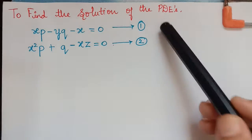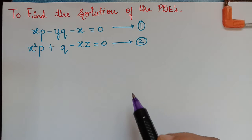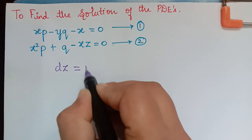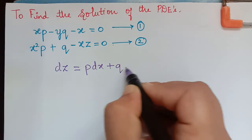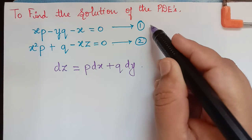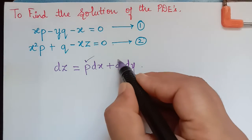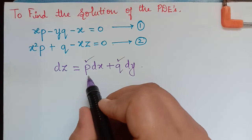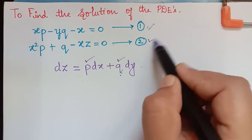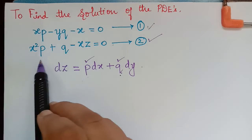I have taken this as equation 1 and this as equation 2. We will find the solution of this equation by using dz = P dx + Q dy. Using this linear equation, we will find the solutions of the given PDEs. To do so, we need the values of P and Q, which will be evaluated by solving these two simultaneous equations with respect to P and Q.